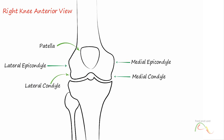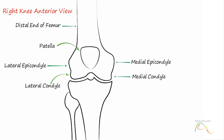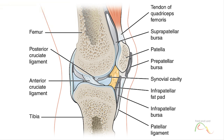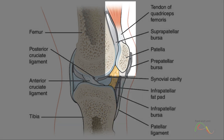At the femoropatellar joint, the patella slides vertically within a groove on the distal femur. The patella is a sesamoid bone and is located within the tendon of the quadriceps femoris muscle, which is the large muscle of the anterior thigh. The patella serves to protect the quadriceps tendon from friction against the distal femur. Continuing from the patella to the anterior tibia just below the knee is the patellar ligament. Acting via the patella and the patellar ligament, the quadriceps femoris is a powerful muscle that acts to extend the leg at the knee and also provides support and stabilization for the knee joint.